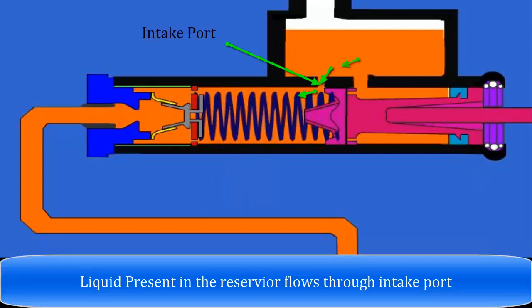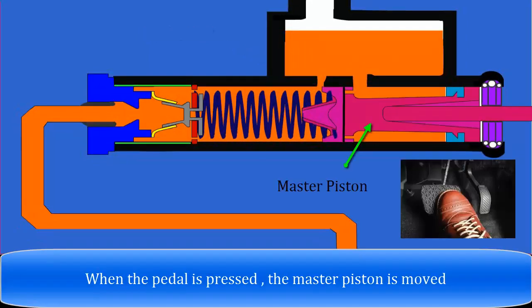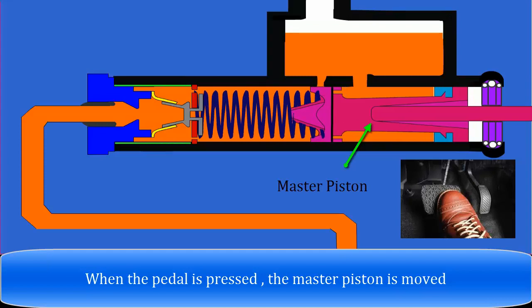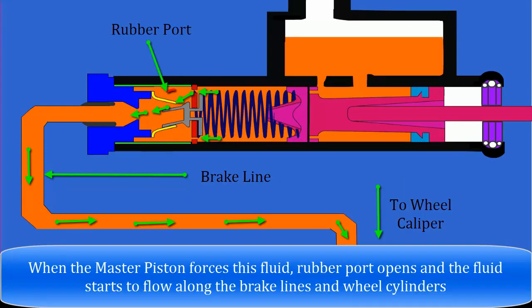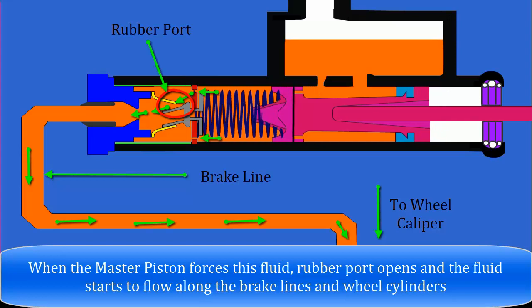Liquid present in the reservoir flows through the intake port. When the pedal is pressed, the master piston is moved. When the master piston forces this fluid, the rubber port opens, and the fluid starts to flow along the brake lines and wheel cylinders.